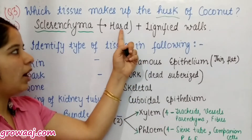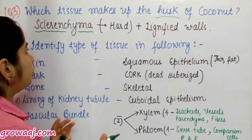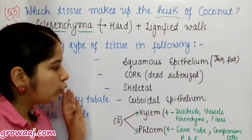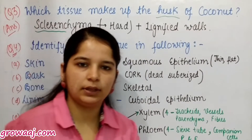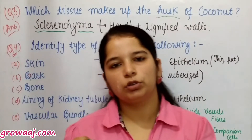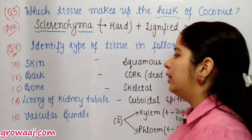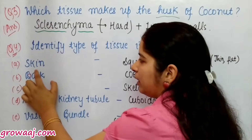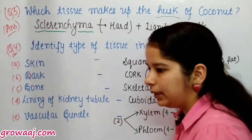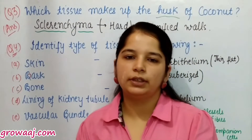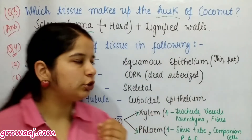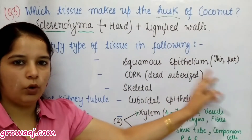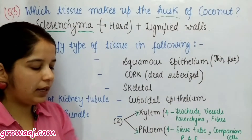Question number four: identify the type of tissue in the following parts. First is skin. The skin is covered by squamous epithelium — thin flat cells that form the outer covering of the body.